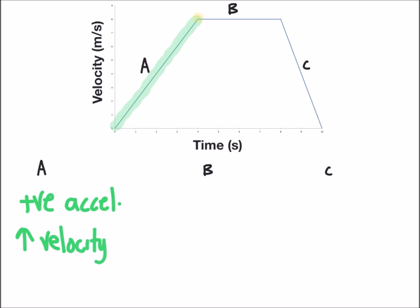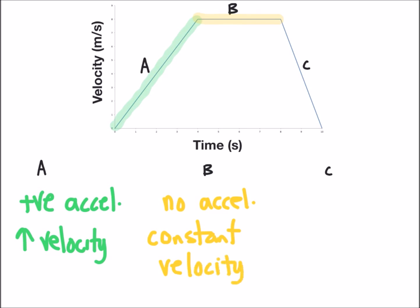For segment B, highlighted in yellow, there is an increase in time but there is no acceleration because there is a constant velocity. What we start with at the beginning of the segment is the same velocity that we end with at the end.